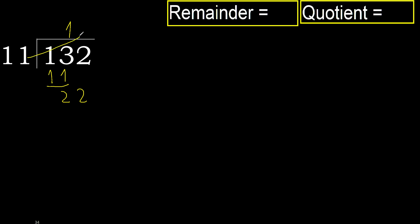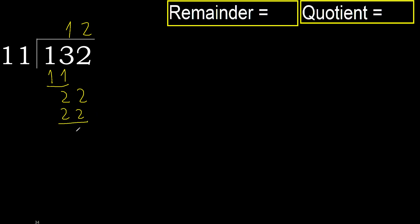Bring down: 22. 11 multiplied by 2 is 22, which is not greater. Subtract: 0. Next — there is no number, therefore finish. 132 divided by 11 is 12.